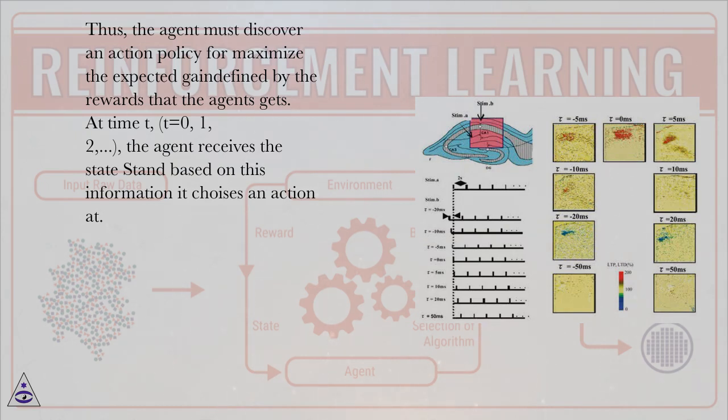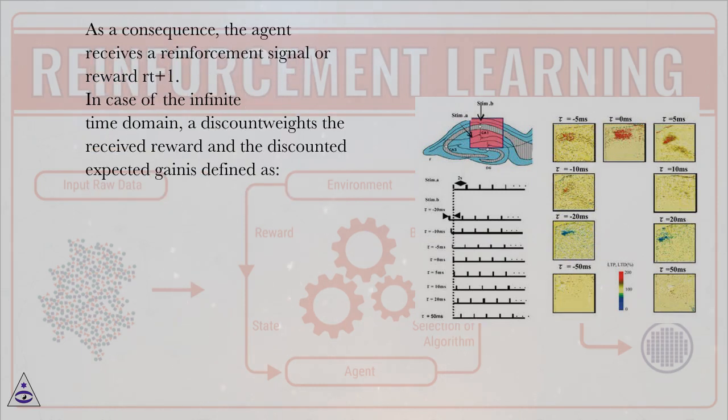At time t, t equals 0, 1, 2, the agent receives the state s_t and based on this information it chooses an action a_t. As a consequence, the agent receives a reinforcement signal or reward R_{t+1}.